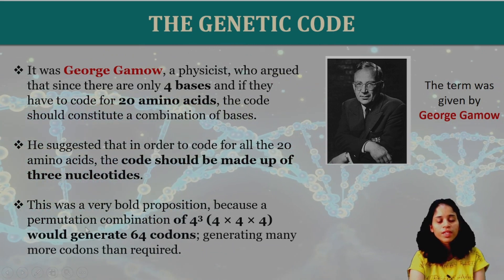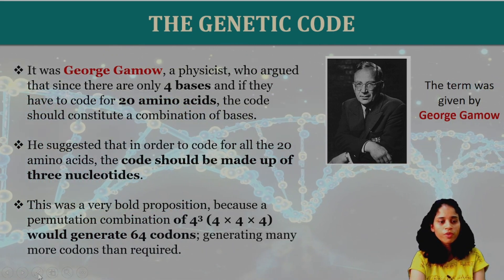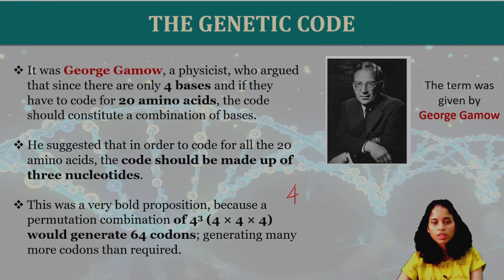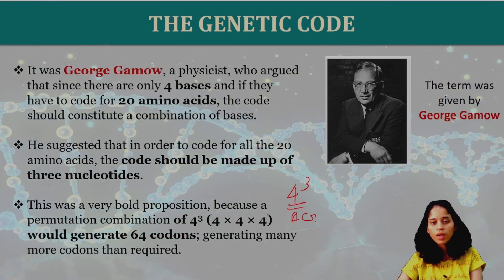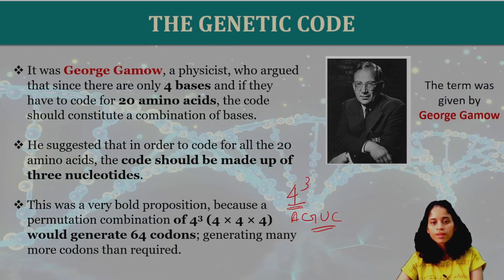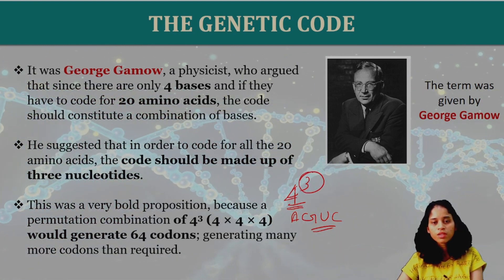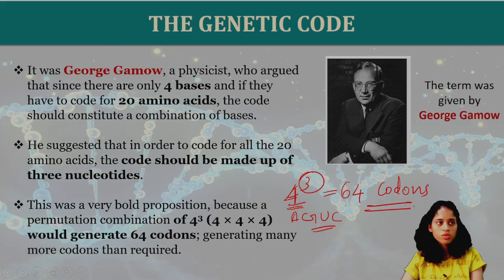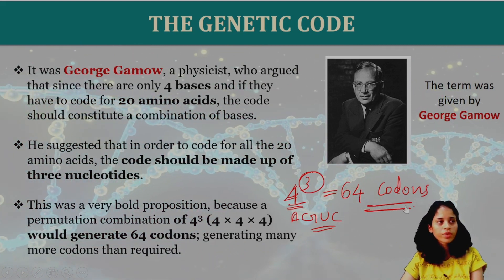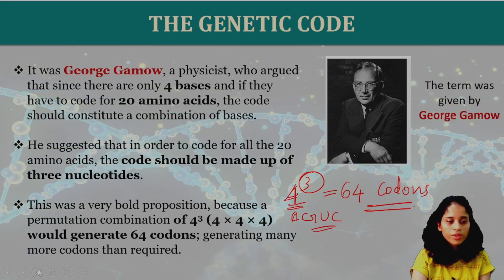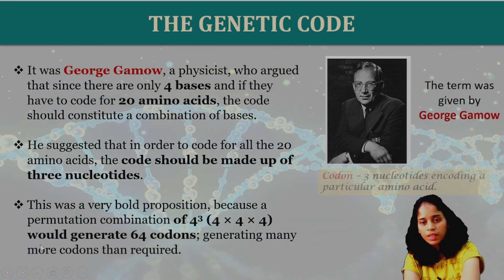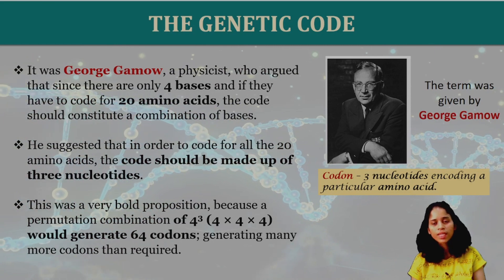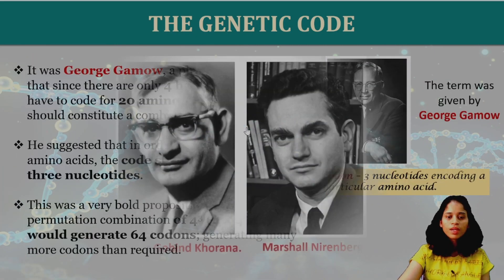This was a very bold proposition because of the permutation combination of 4 raised to the power of 3, which gives 64 possible codons from 4 bases. There are 3 nucleotides per codon coding for particular amino acids.